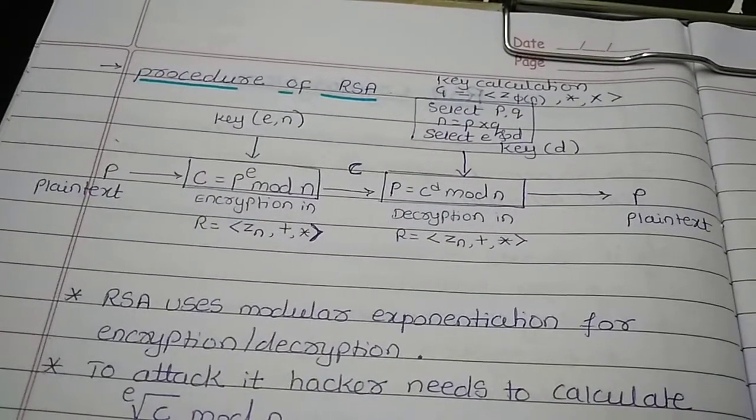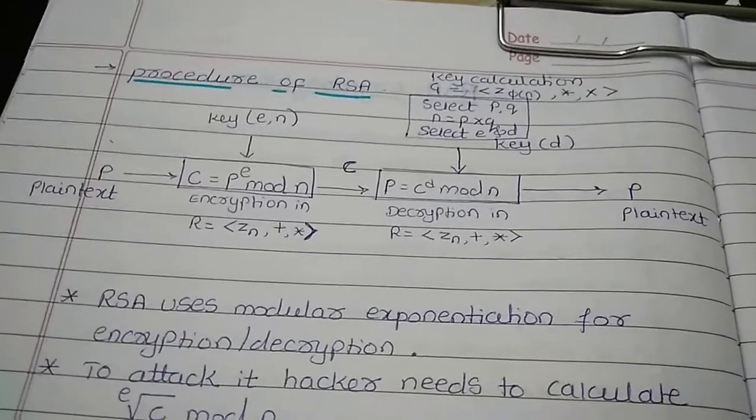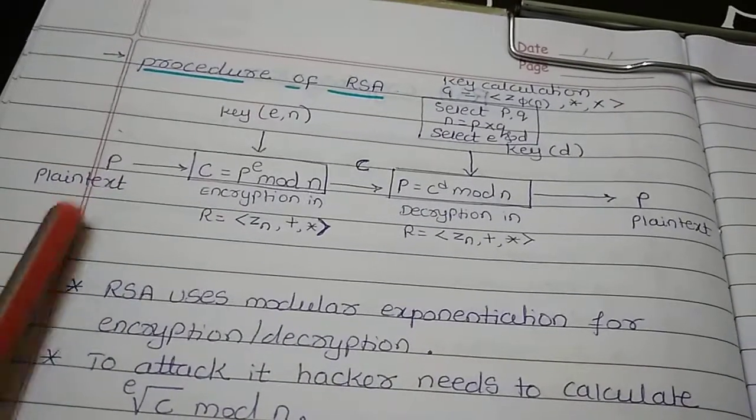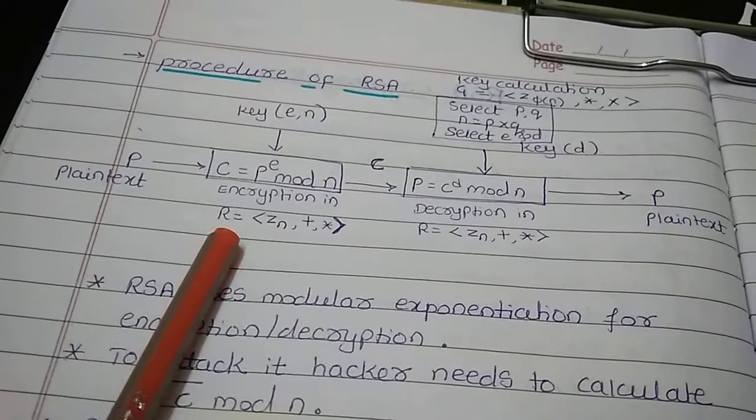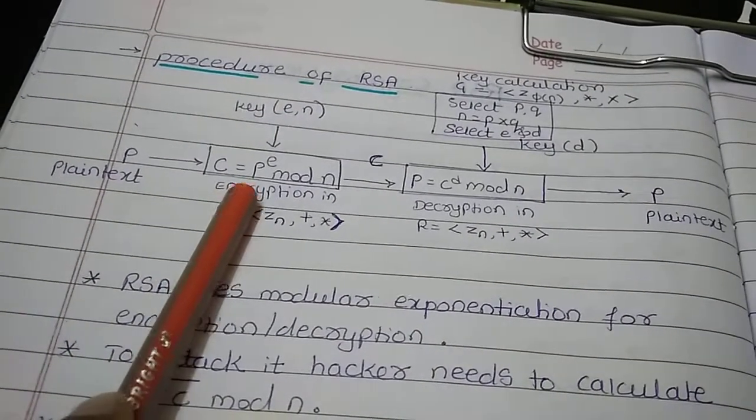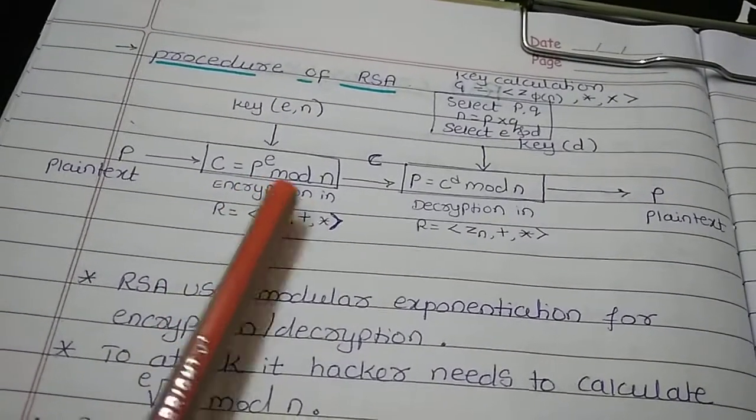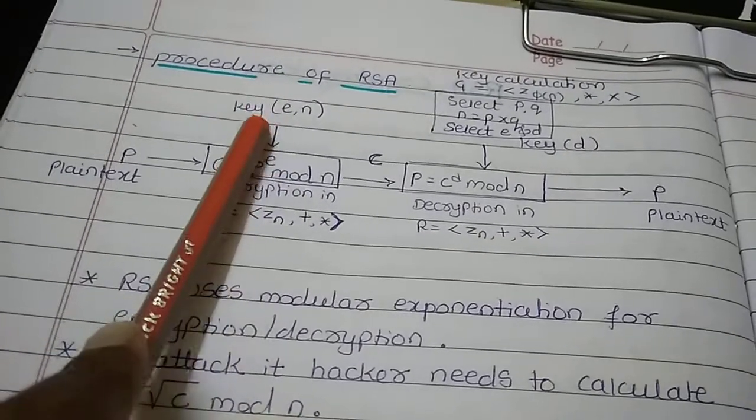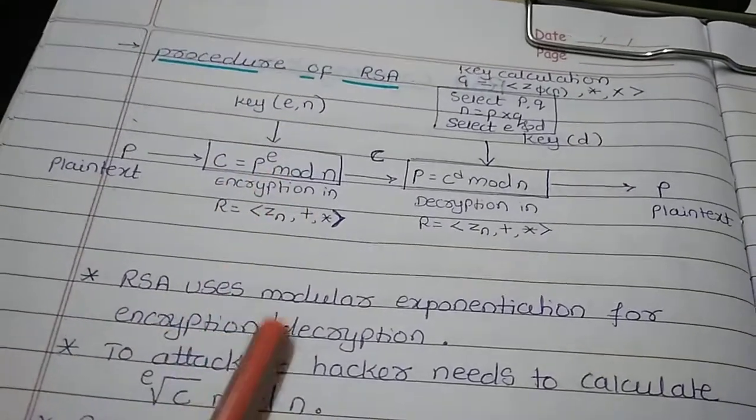Let us see the procedure of RSA. P is the plain text which is going to be encrypted by using the formula C equals P to the power E mod N. Here we are using the public key E and modulo N.